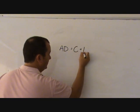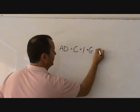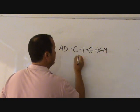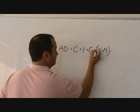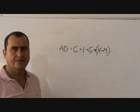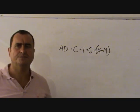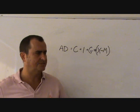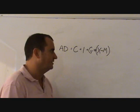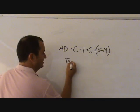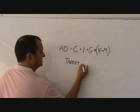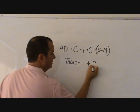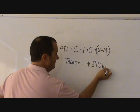and I, and G, and X minus M. Well, if the government wants to boost aggregate demand, let's say it feels it needs to boost aggregate demand by 10 billion. The target for the government fiscal policy is an increase of 10 billion pounds.